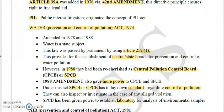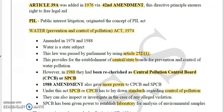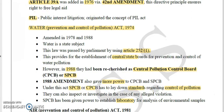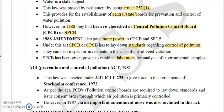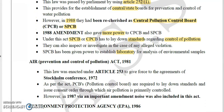So PIL — Public Interest Litigation — and the Water Prevention Act are both important acts. Another important act is the Air Prevention and Control of Pollution Act. Remember it came in 1981 — the government of India adopted an act to control the pollution of air.